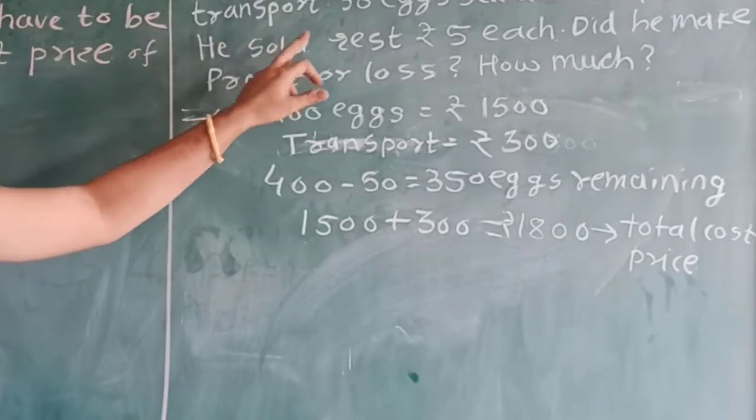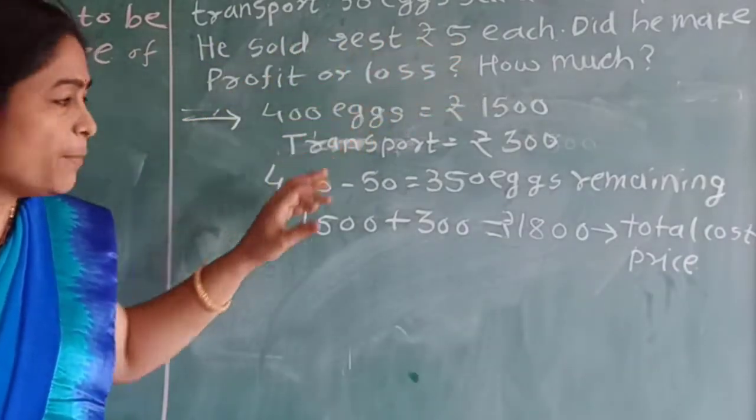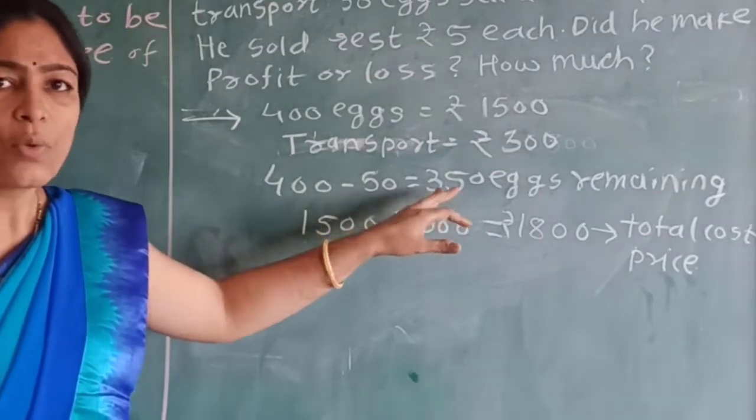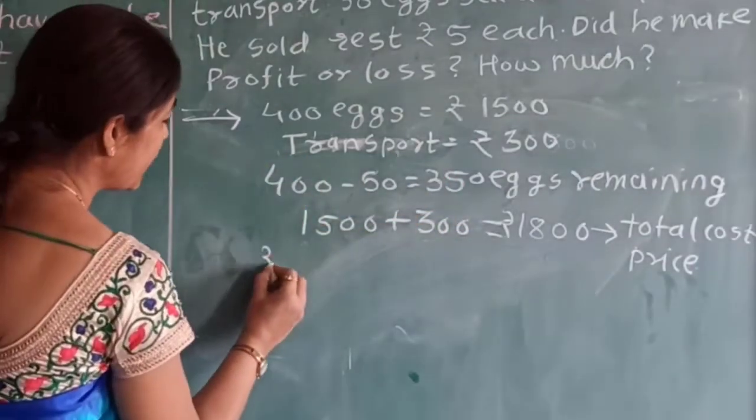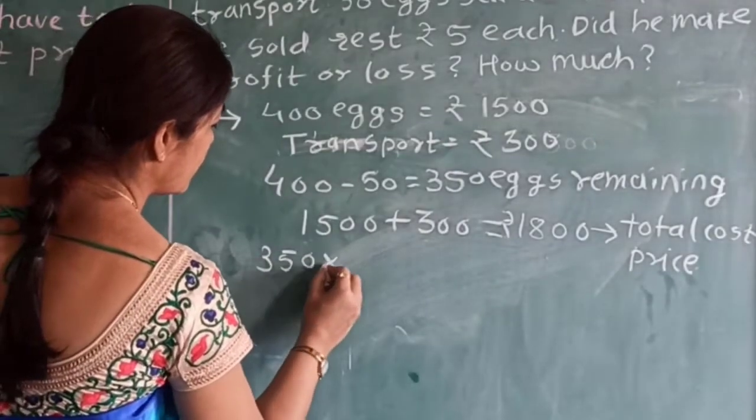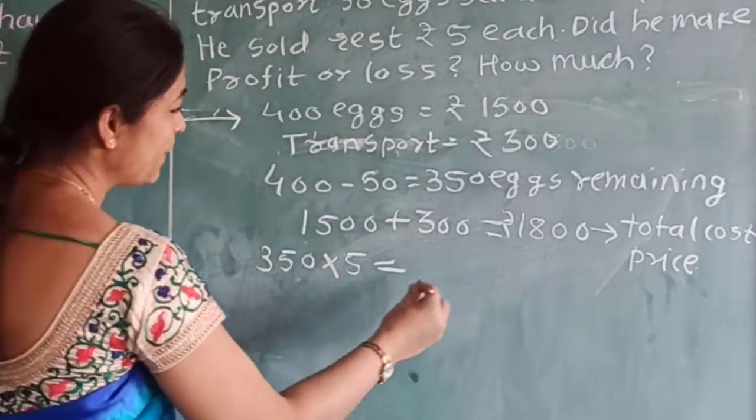He sold at Rs.5 each. It means that 350 eggs, he sold 1 egg at Rs.5. So, 350 into 5.